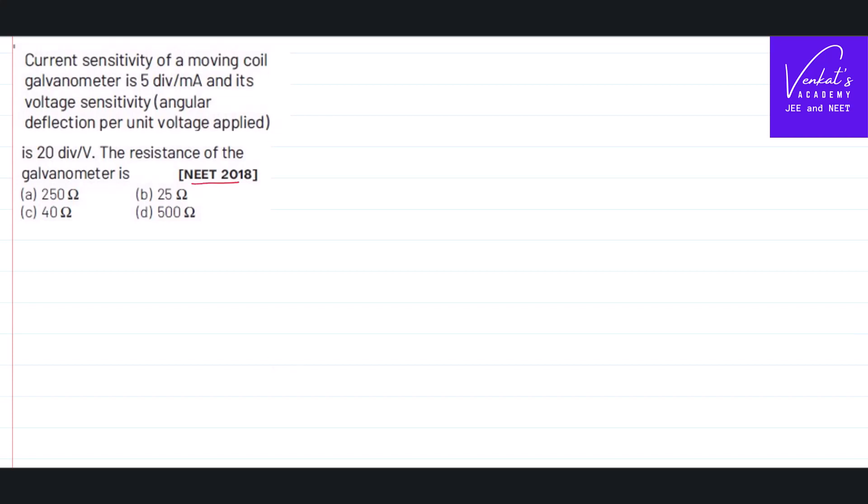This is a NEET 2018 question on moving charges. The question says the current sensitivity of a moving coil galvanometer is 5 divisions per milliampere and voltage sensitivity is also given. What is the resistance of the galvanometer?